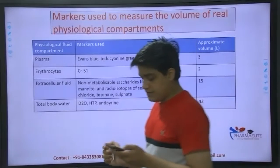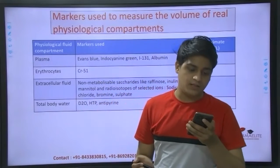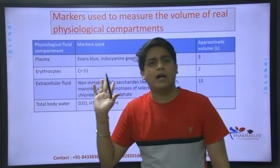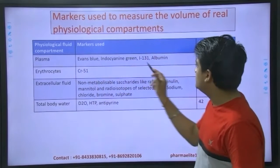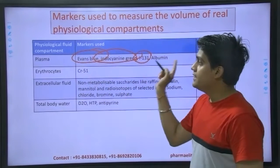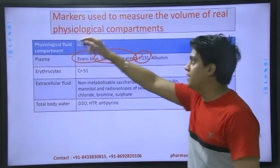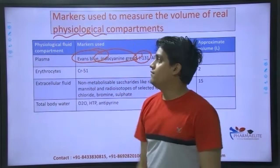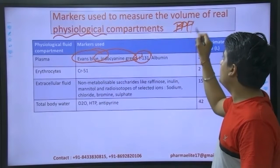Going to the next part - once, markers are used to identify different physiological compartments. This is a frequently asked question. This is a different domain - physiological compartments - this is from your subject of biopharmaceutics.